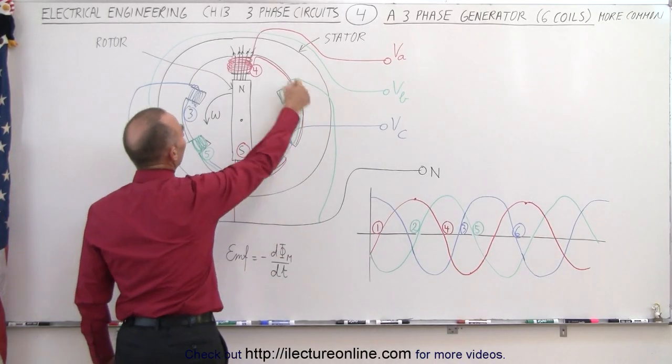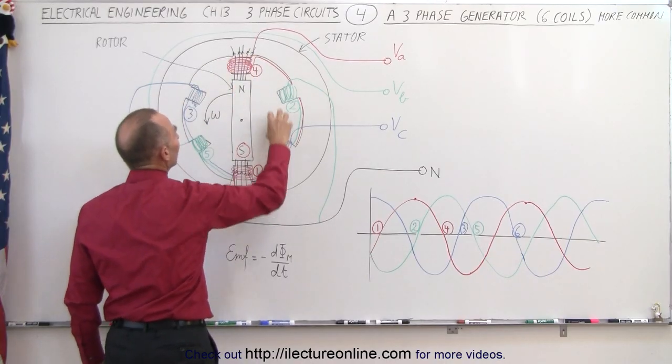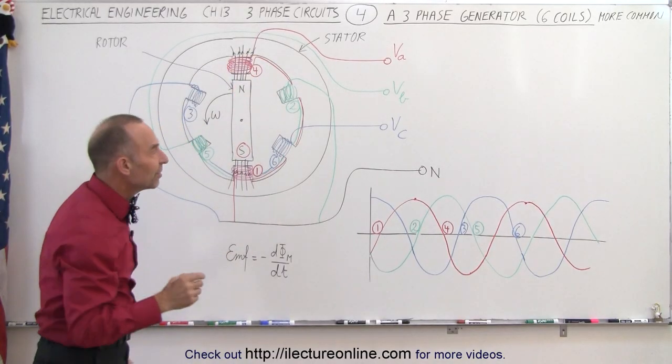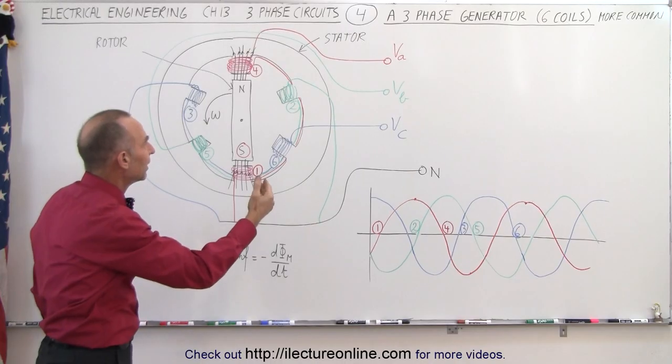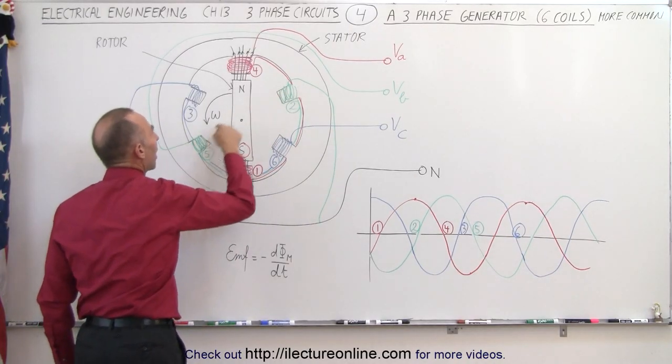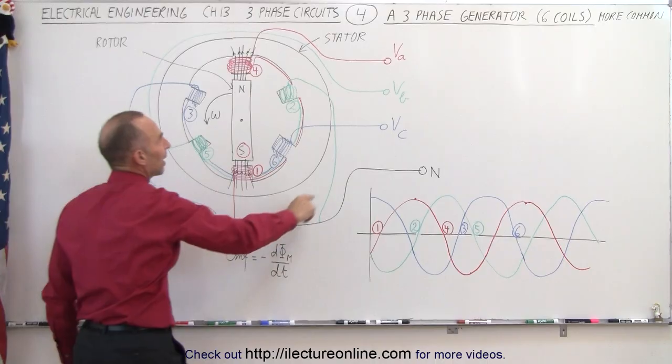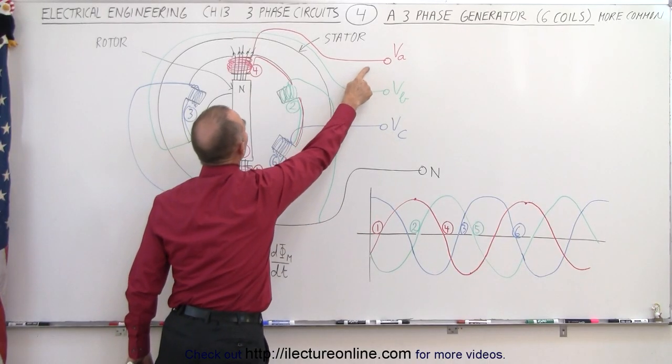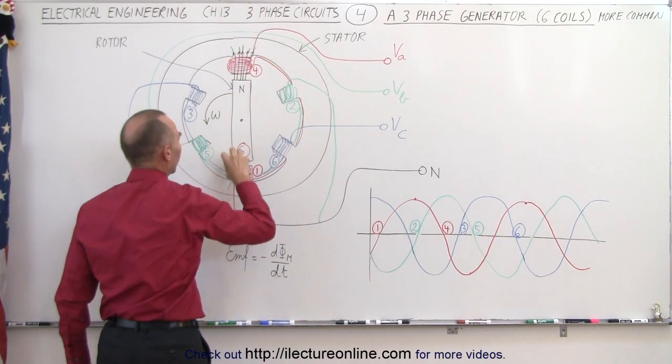Notice inside the stator we have six of these knobs instead of three, which means that each voltage provided has a coil around two of the knobs that are opposite of one another. So notice we have the red line here, V sub A, which has a coil here and a coil there.